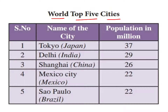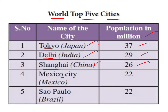The world's top 5 most populous cities are: Tokyo, Japan with 37 million; Delhi, India with 29 million; Shanghai, China with 27 million; Mexico City, Mexico with 22 million; and São Paulo, Brazil with 22 million.